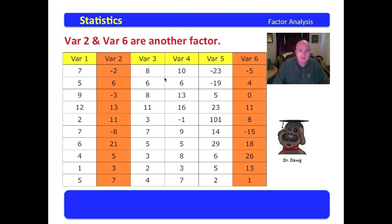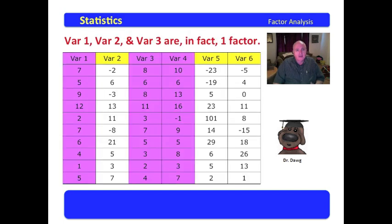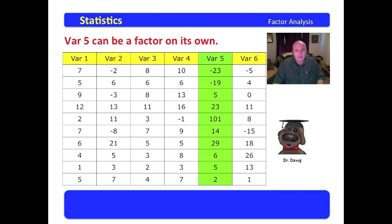We discover that variables 2 and 6 are highly correlated. Therefore, variables 2 and 6 may be another factor. And then we observe that variable 5 really isn't correlated to anything, so it may be a factor on its own. I want you to look at that again. Here we have a factor. Here we have a factor. And here we have a factor.